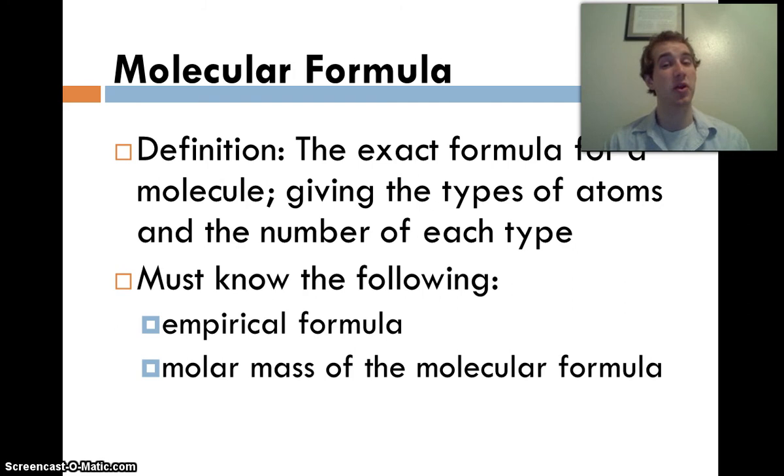So in order to find the molecular formula, you actually need to know two things. Somewhere or another, you need to know the empirical formula, and you need to know the molar mass of the molecular formula. You've got to have those two pieces. And if you have those two pieces, you can then solve for the molecular formula.